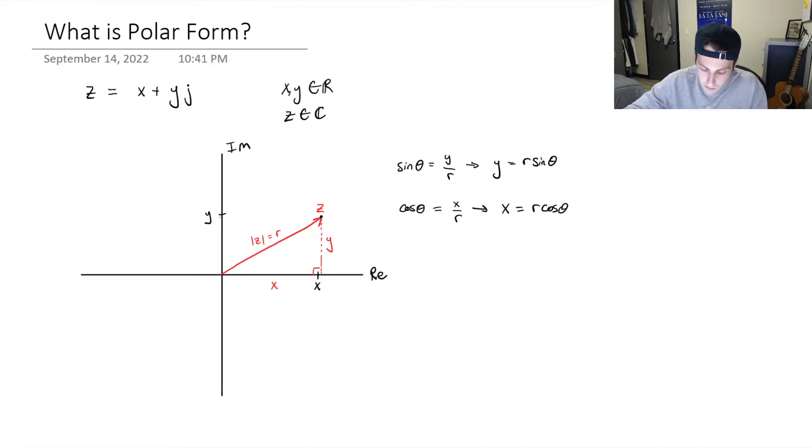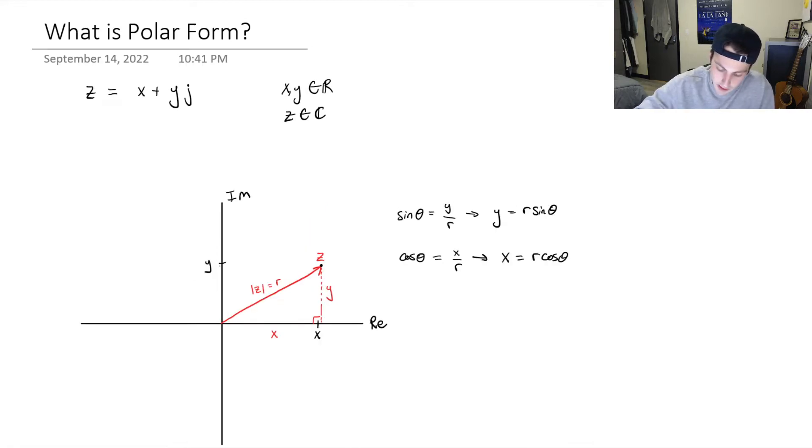Now, all I'm going to do is plug in y and x into the equation for z. And we get r cosine of theta plus... Oh, and let's define theta on our axes. Remember, theta is the direction that the vector z makes with the positive direction of the real axis. Right? Great. And then our y is r sine theta, r sine theta, and this is times j.